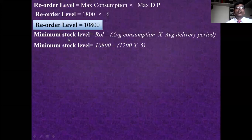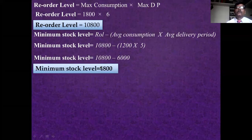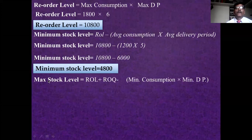ROL is 10,800. Minimum stock level = ROL − (average consumption × average delivery period) = 10,800 − (1,200 × 5) = 10,800 − 6,000 = 4,800 units. That is the minimum stock level.